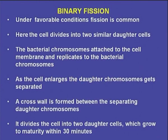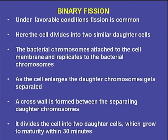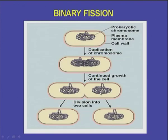In binary fission, under favorable conditions, the cell divides into two similar daughter cells. The bacterial chromosome attaches to the cell membrane and replicates. As the cell enlarges, the daughter chromosomes get separated. A cross wall is then formed between the separating daughter chromosomes, dividing the cell into two daughter cells which grow to maturity within 30 minutes. Here we see how the prokaryotic chromosome is duplicated and the cell continues to grow and divide into two cells.